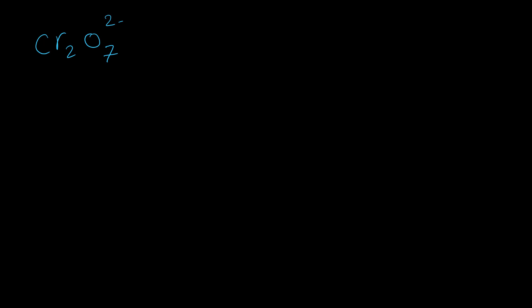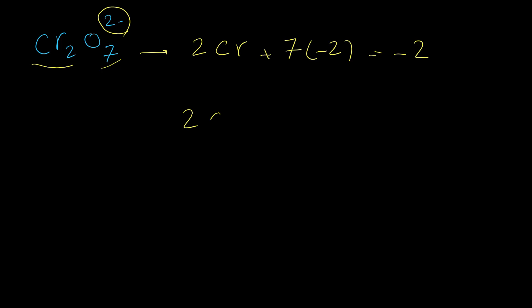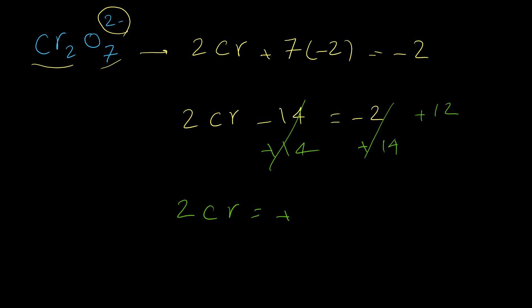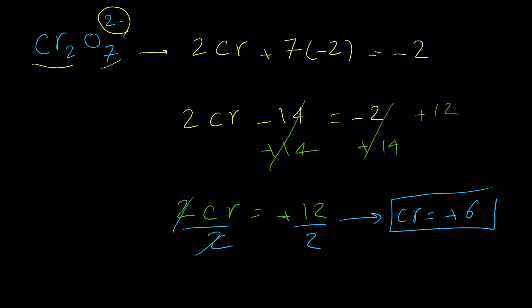Next, let's calculate the oxidation number for chromium in the dichromate anion, Cr2O7^2-. There are 2 chromium atoms, so we write 2Cr, and 7 oxygen atoms each at -2. The total must equal the charge, -2. So 2Cr + (7 × -2) = -2, meaning 2Cr - 14 = -2. Adding 14 to both sides gives 2Cr = +12. Dividing by 2, chromium = +6. The oxidation number for each chromium atom is +6.